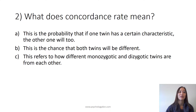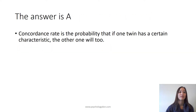Question 2: What does concordance rate mean? Is it A, the probability that if one twin has a certain characteristic the other one will too; B, the chance that both twins will be different; or C, how different monozygotic and dizygotic twins are from each other? The answer is A. Concordance rate is the probability that if one twin has a certain characteristic, the other one will too.